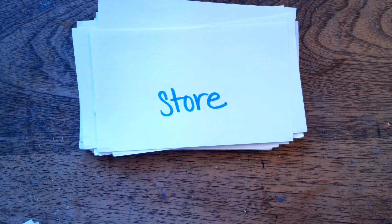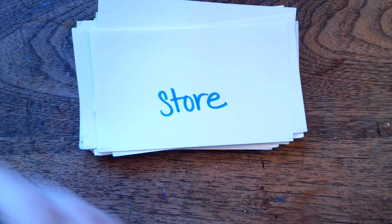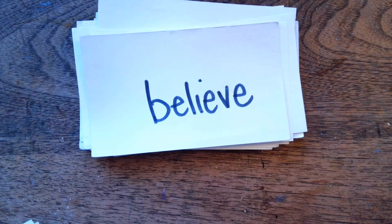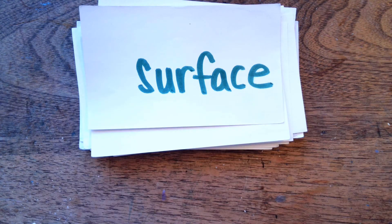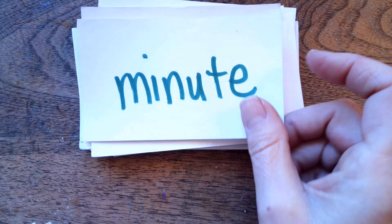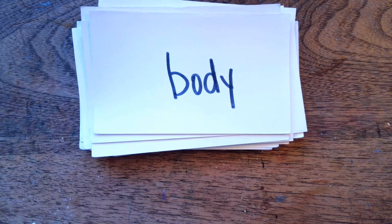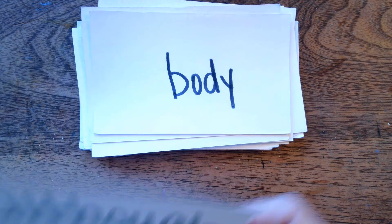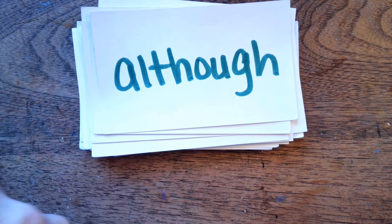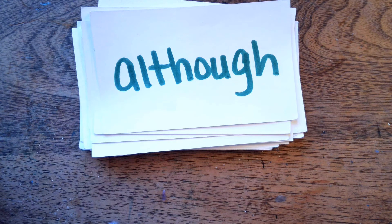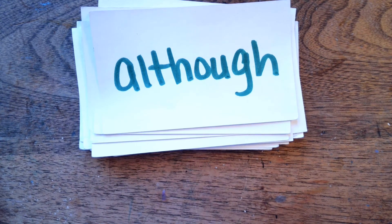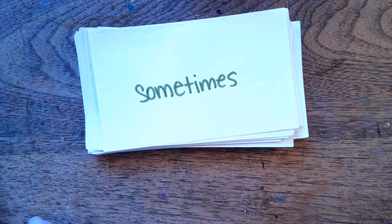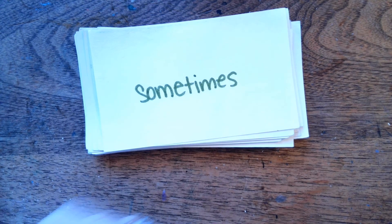Next word is a sight word — store. Believe. These are all sight words. Surface. Minute. Body. Although. So these are a lot of the words that are on the pages I sent last week, so we're doing double. These are really tricky, so we're doing double. You're going to read them on paper and watch them on the video, and you will get these down pretty easily. Sometimes.